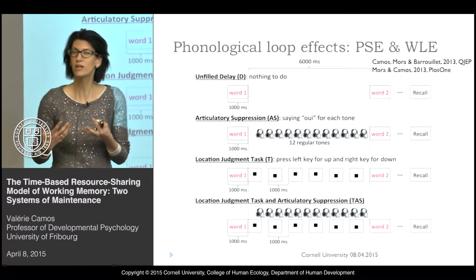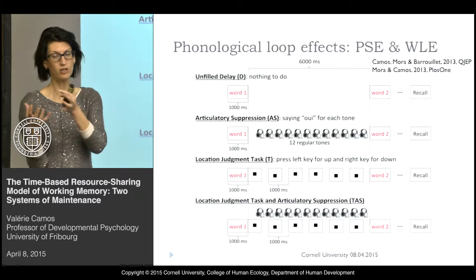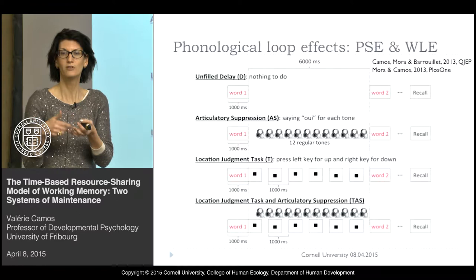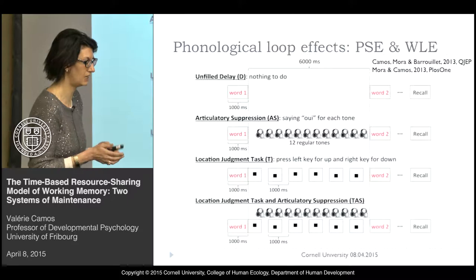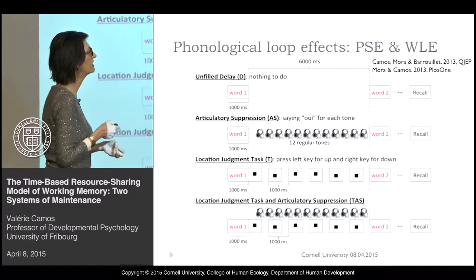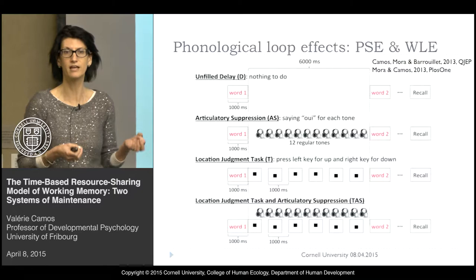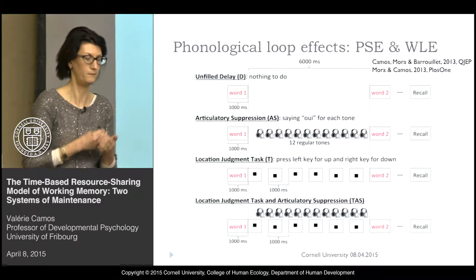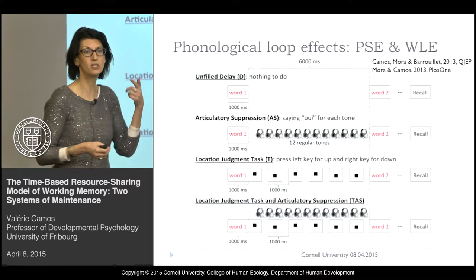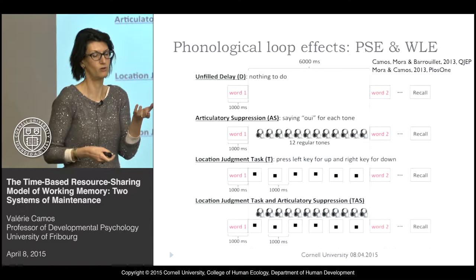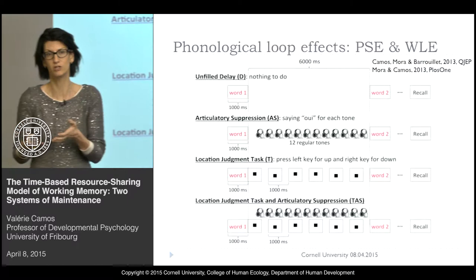So if we have two systems — a central system that is attentionally demanding, and another system which is a phonological loop — this phonological loop is well known to be affected by the phonological characteristics of the memory items to maintain. Two big effects of the phonological loop are the phonological similarity effect and the word length effect. The phonological similarity effect is that it's more difficult to maintain series of words when they are phonologically similar than dissimilar, because it induces phonological confusion. The word length effect is that if you have longer words to maintain, it's longer to rehearse, so on a constant duration you can only rehearse fewer words — the phonological loop will maintain fewer long words than short words.